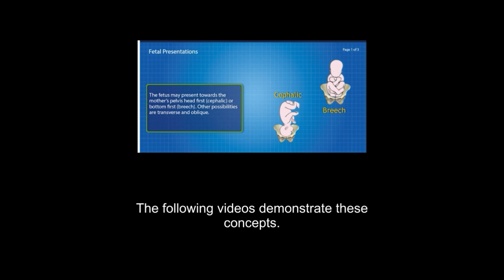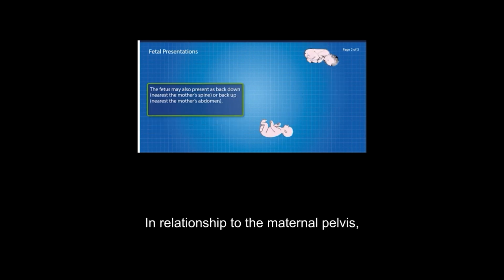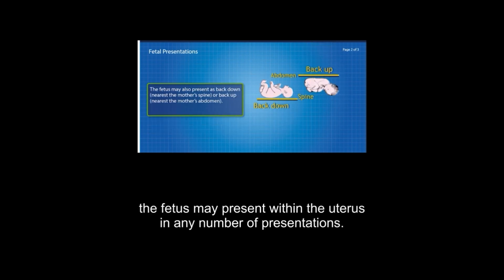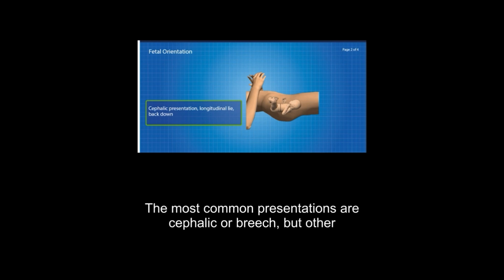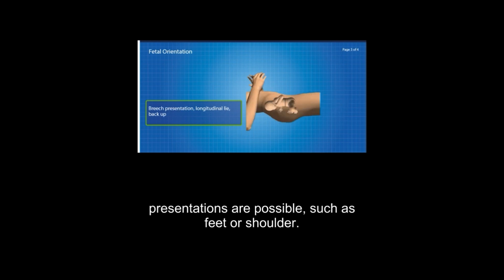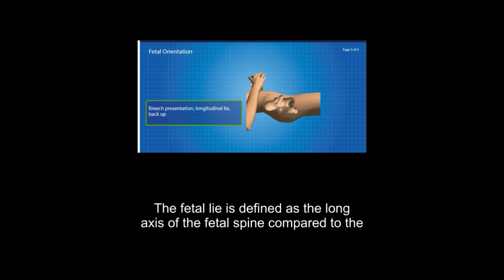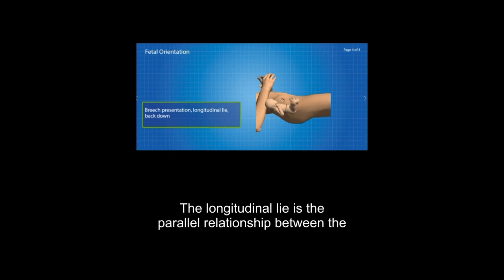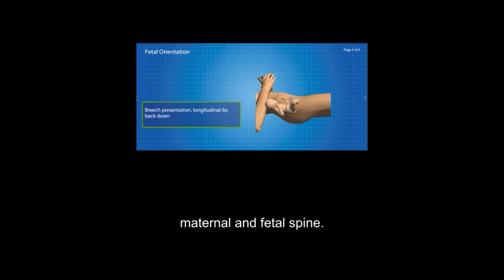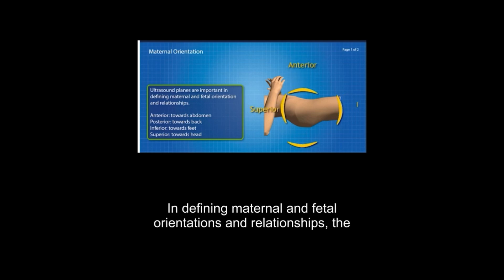The following videos demonstrate these concepts. In relationship to the maternal pelvis, the fetus may present within the uterus in any number of presentations. The most common presentations are cephalic or breech, but other presentations are possible such as feet or shoulder. The fetal lie is defined as the long axis of the fetal spine compared to the long axis of the maternal spine. The longitudinal lie is the parallel relationship between the maternal and fetal spine.